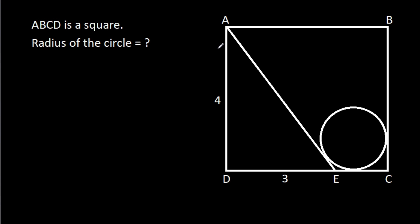In this video, we have been given that ABCD is a square and AD is 4, DE is 3, then we have to find the radius of the circle.